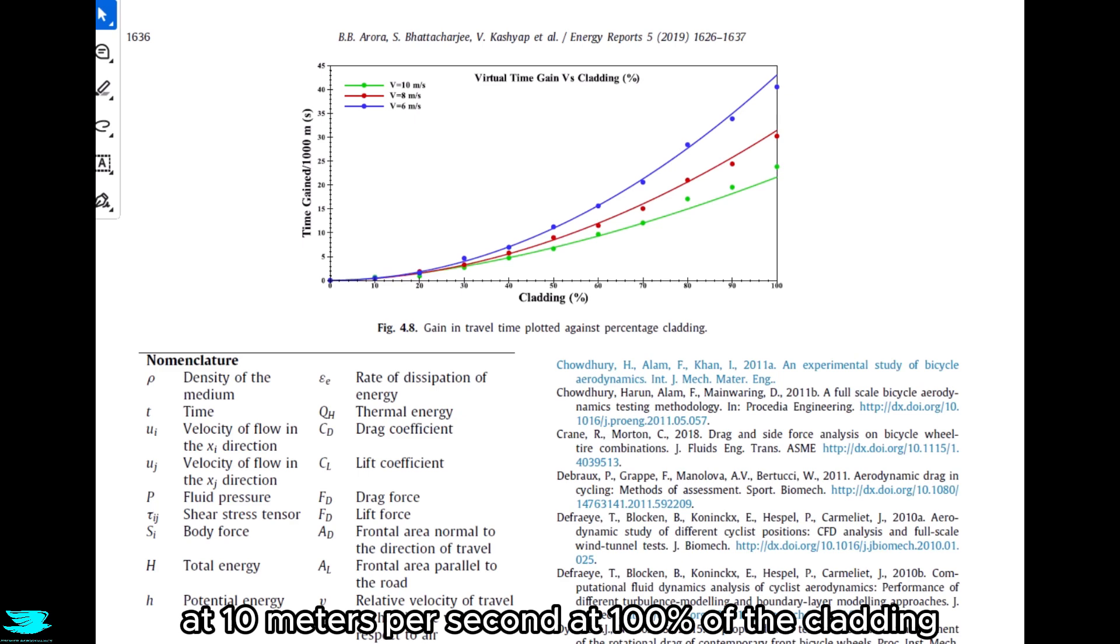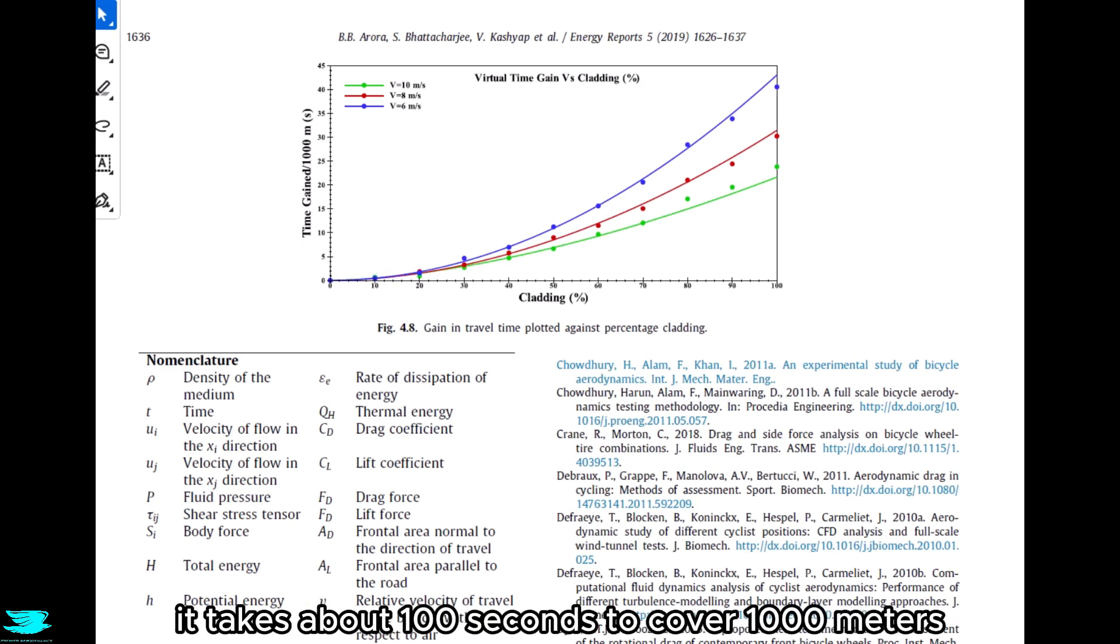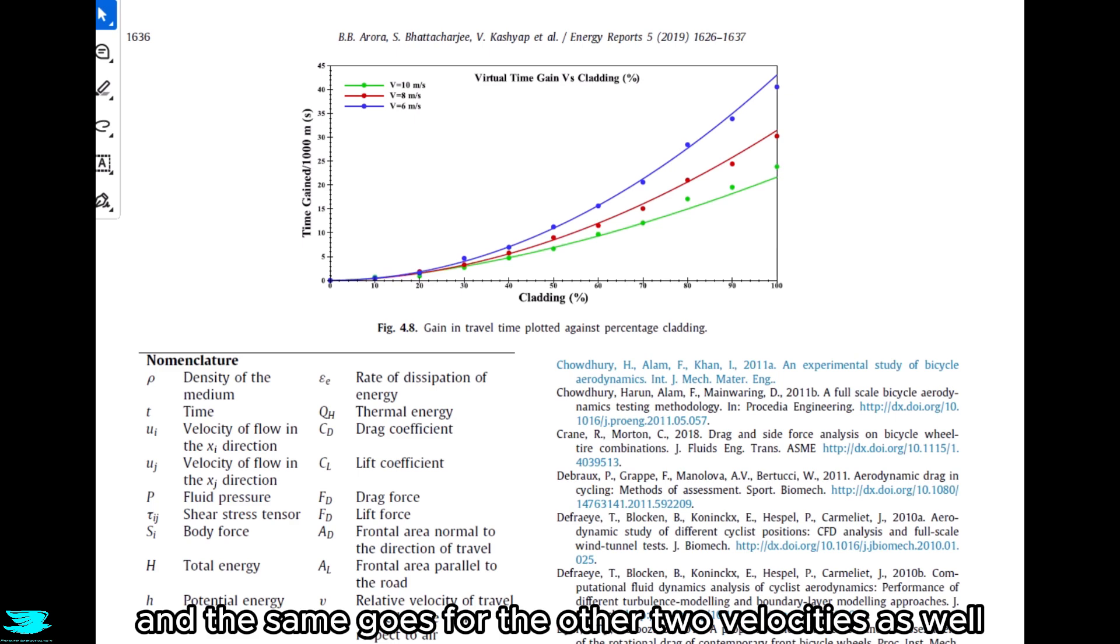At 10 meters per second at 100% of the cladding, the time required to cover 1000 meters drops by 20 seconds. Is that good? Well, the fact that there is a drag reduction here, a reduction in time, is definitely good. But more than that, at 10 meters per second, it takes about 100 seconds to cover 1000 meters. With this drag reduction, the associated increase in velocity and the amount of time saved, that drops from 100 seconds to 80 seconds now. So that's a 20% drop in time. That's insane. For just a few percent drop in drag, this time saving is huge. And the same goes for the other two velocities as well.